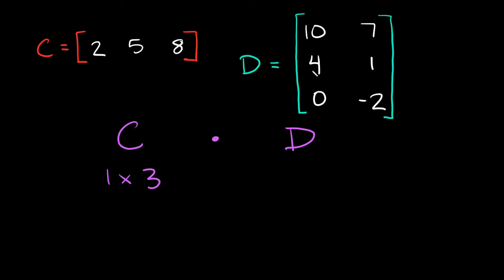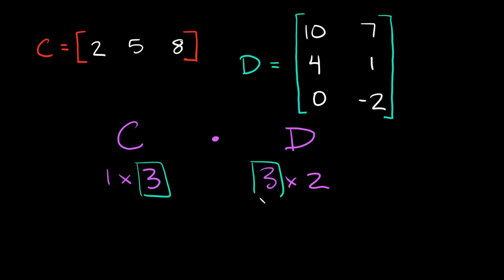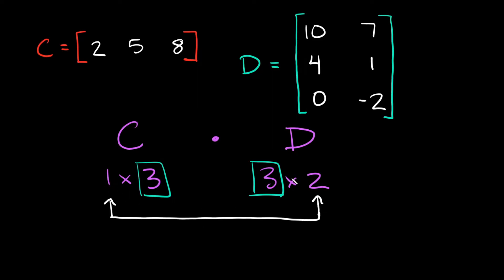And then matrix D over here is a three by two, because we have three rows and two columns. So if I want to multiply C times D, I can do that, because this number right here and this number right here match up. And again, the other thing we get from this — the numbers at the end — they tell us how big the matrix is for our answer. So our answer is going to be a one by two.